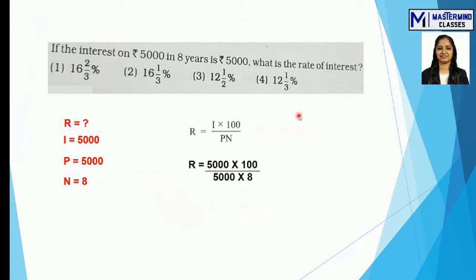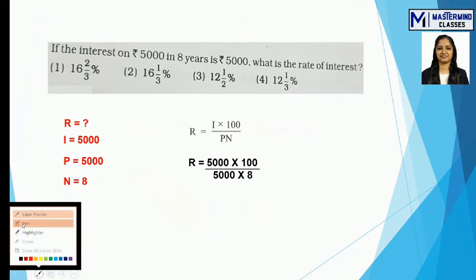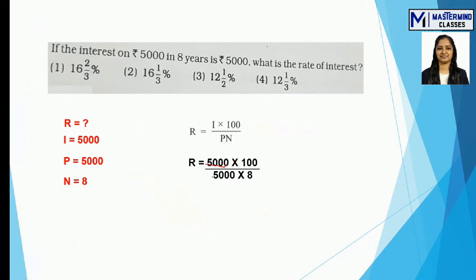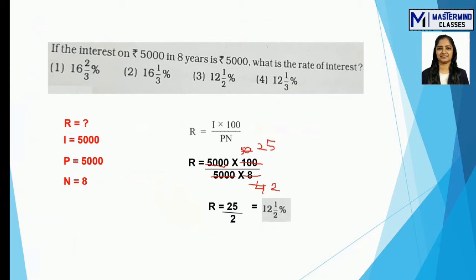Substituting: the 5000s cancel. Then reduce 8 and 100 using the 2-times table: 2×4=8 and 2×5=10, giving 50. Reduce 50 and 4 again: half of 50 is 25, half of 4 is 2. So R = 25/2, which as a mixed fraction is 12½%. That is option number 3.